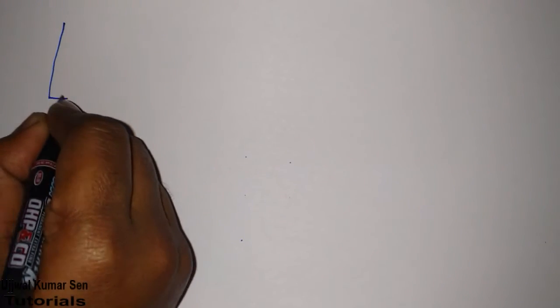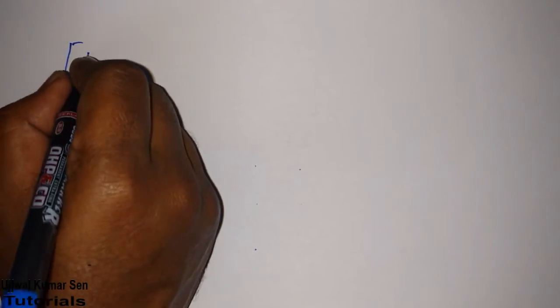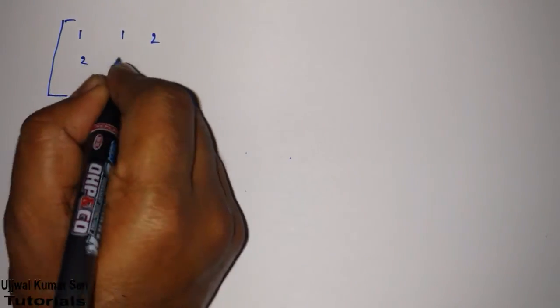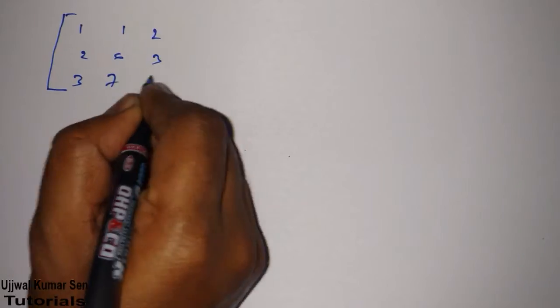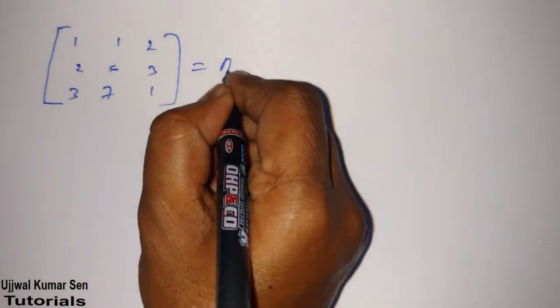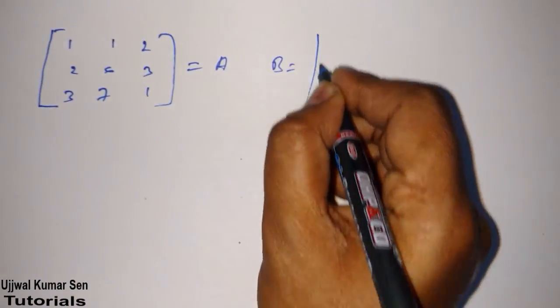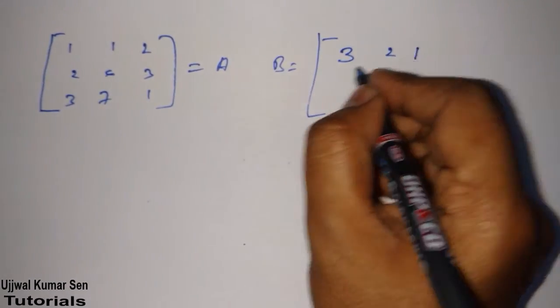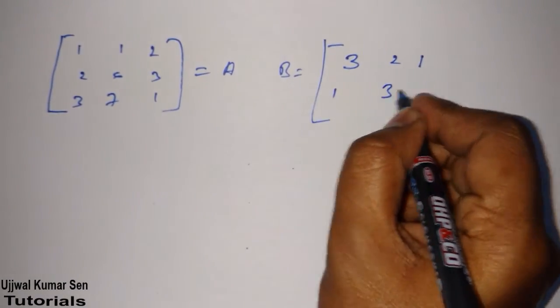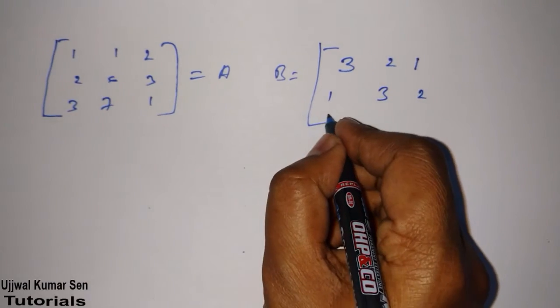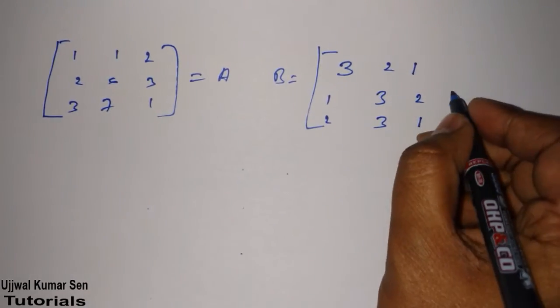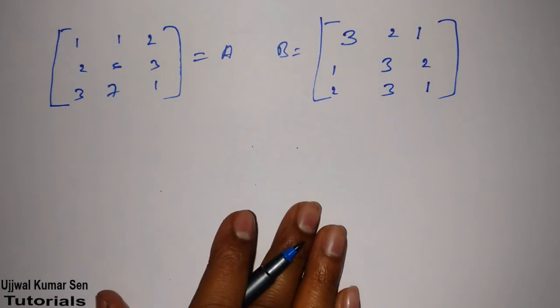Suppose that, we have given matrix 3 by 3, 1, 1, 2, 2, 6, 3, 3, 7, 1. Let's say this is A. Let's say this is B. B is 3, 2, 1, 1, 3, 2, and 2, 3, 1.